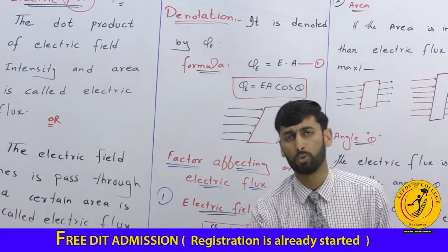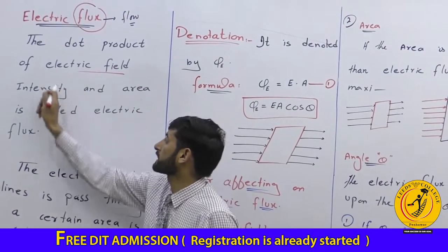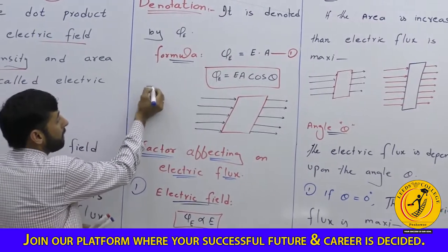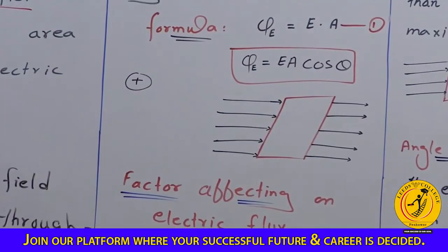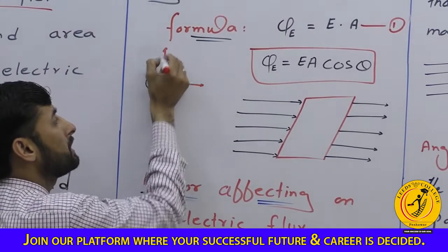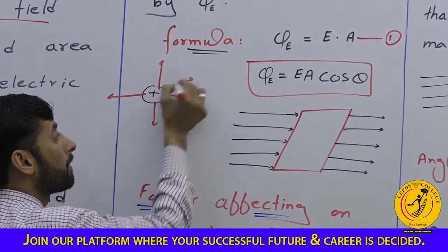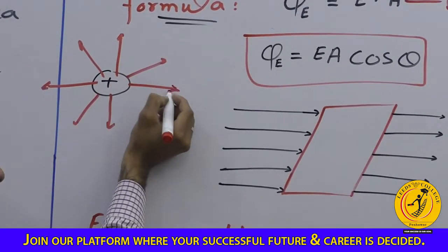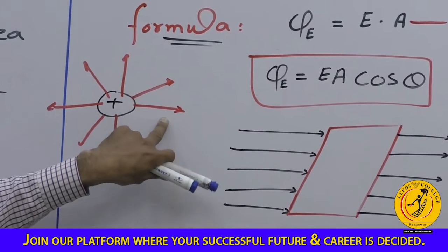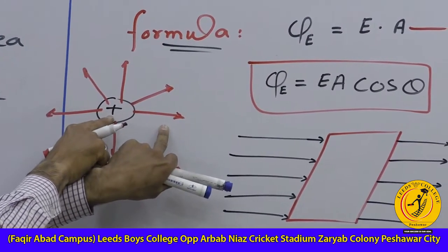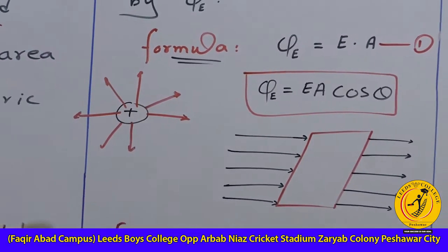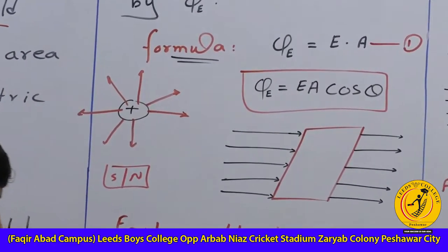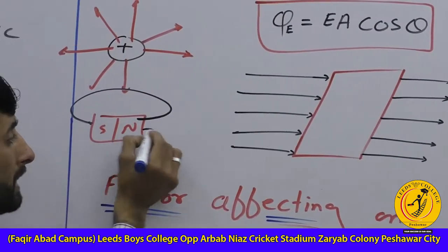The electric field lines are associated with positive charge — the electric field lines originate from positive charge. The north pole and south pole of a magnet have magnetic field lines, analogous to electric field lines.